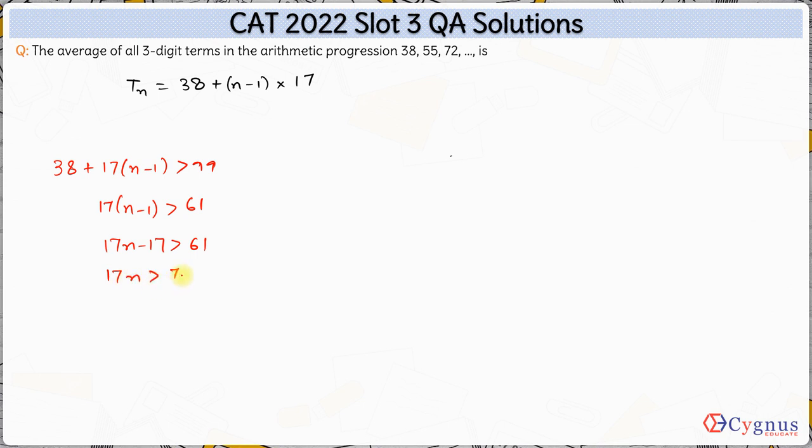17n should be greater than 78, that means n should be greater than 78 by 17, which comes out to be 4 point something. So the least value of n is 5.